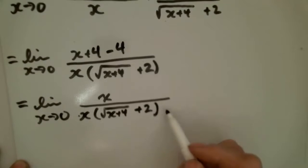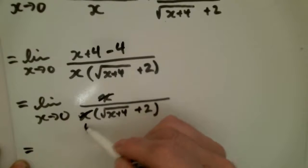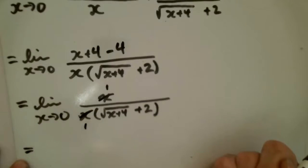x times the square root of x plus 4 plus 2. What we notice is that we can cancel the top and bottom. x divided by x is 1.